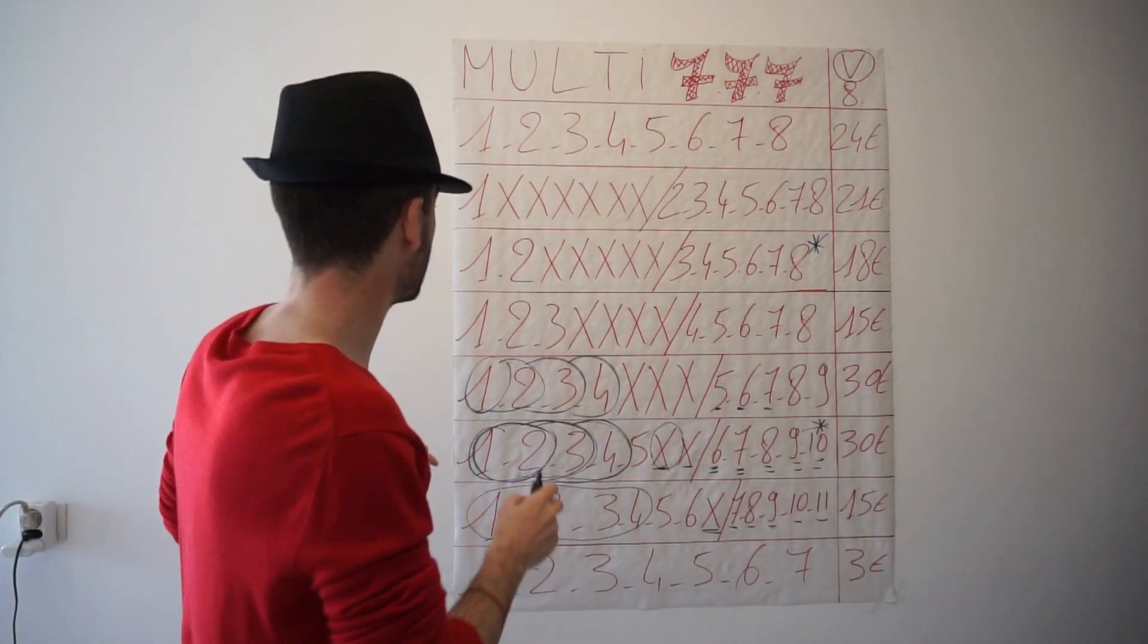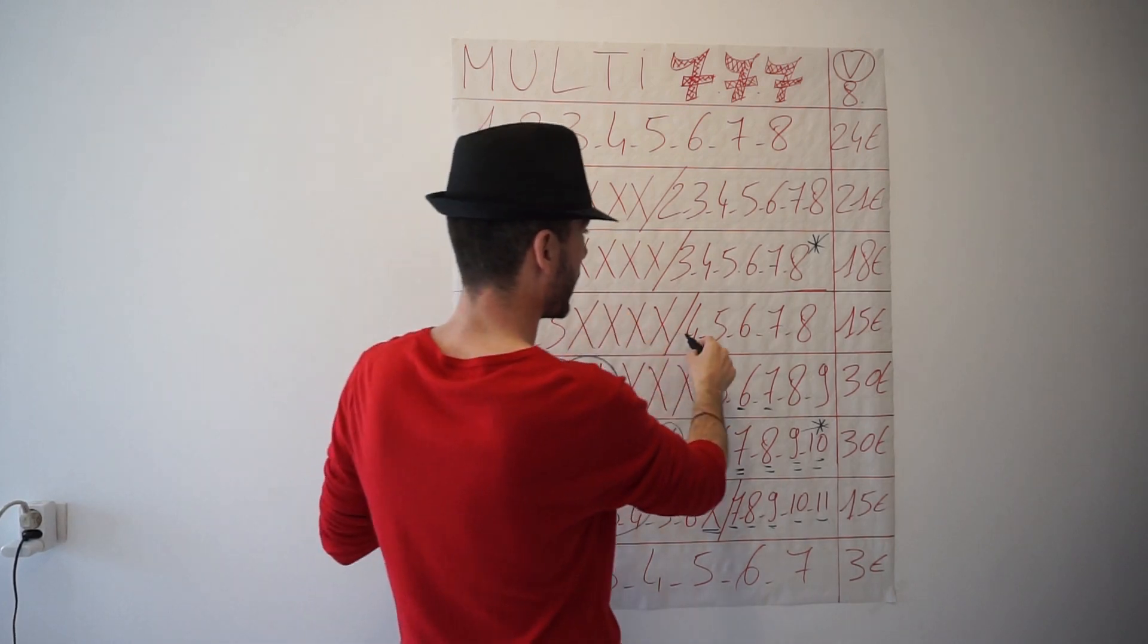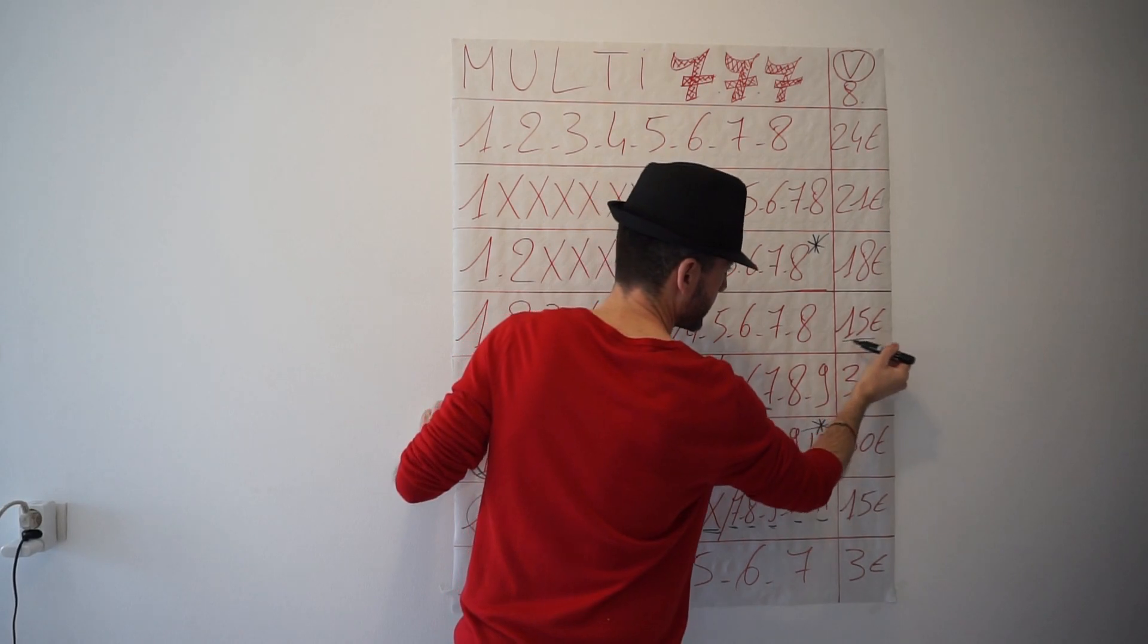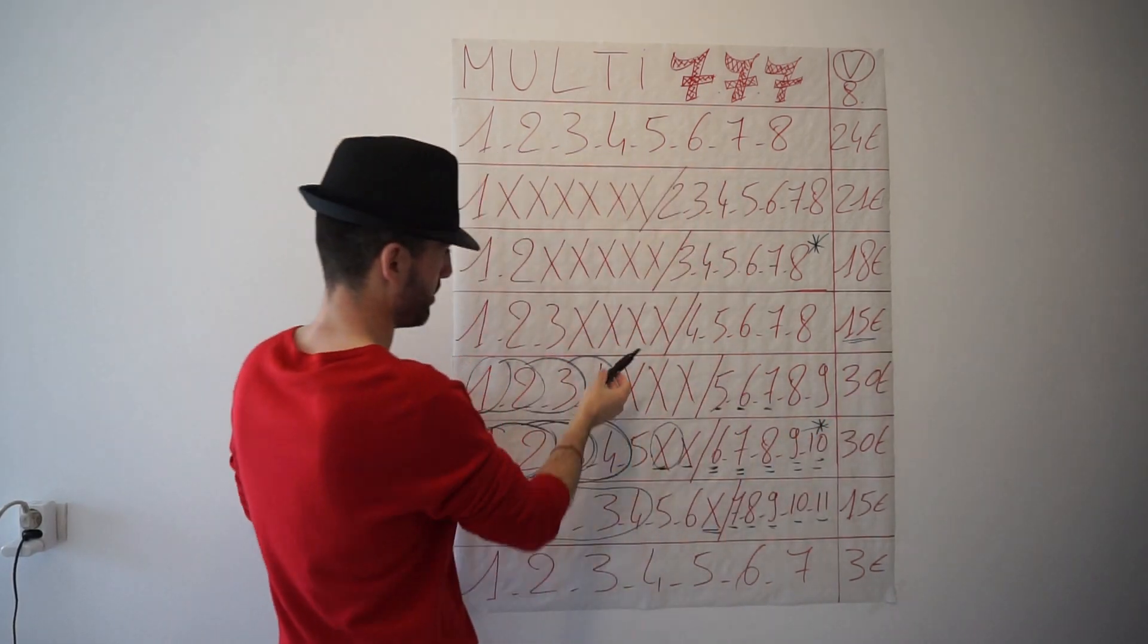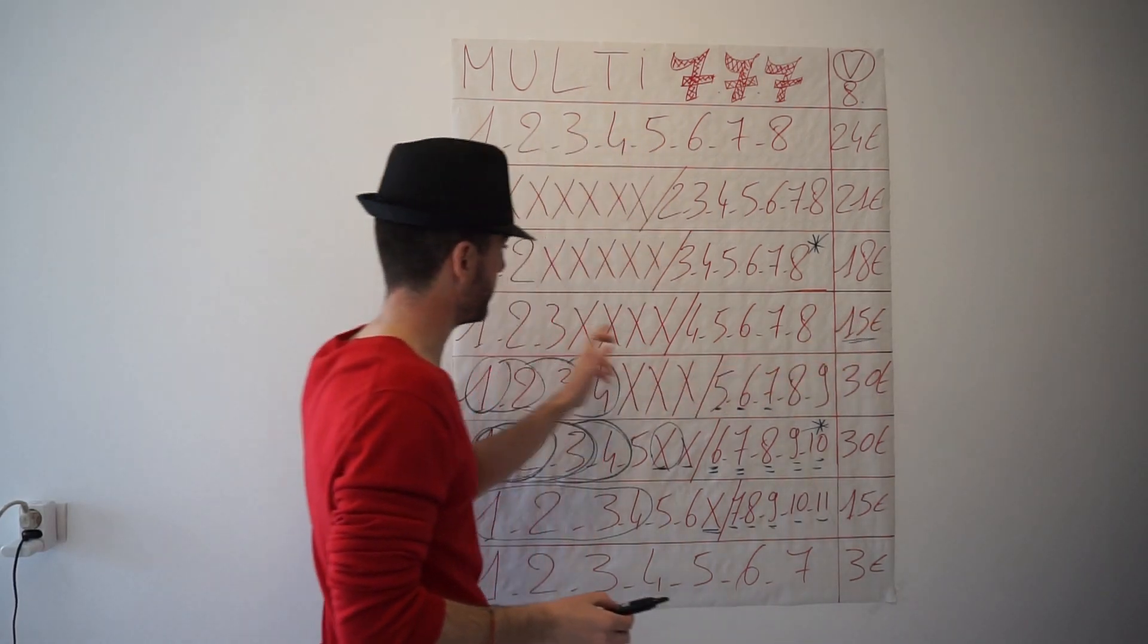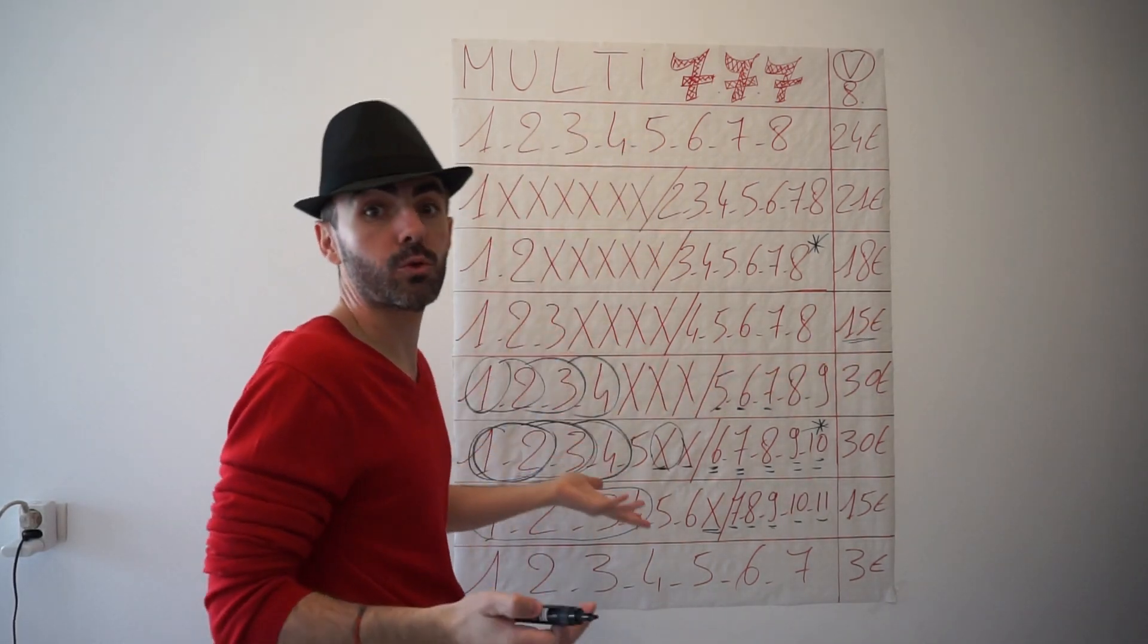Ensuite le jeu suivant, trois de base, quatre croix, cinq derrière, coût du 15 euros. Pareil, on perd en mise de départ, mais vous avez vu on perd en base. Donc d'un côté moins cher, mais moins de chevaux en base, donc moins d'erreurs.